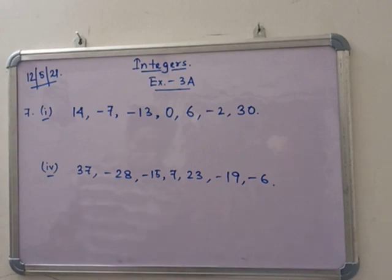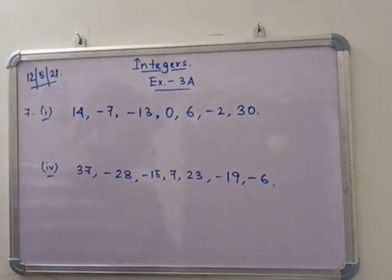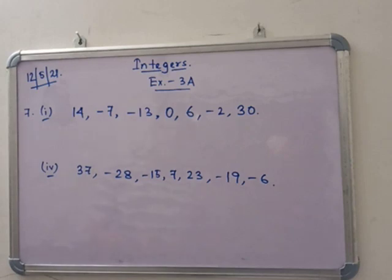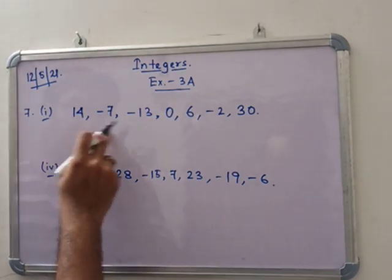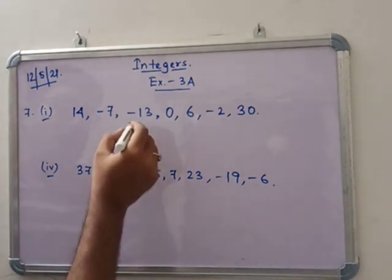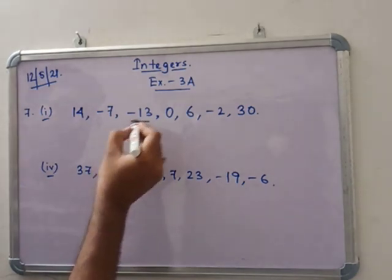In number 7, see that we write the following integers in ascending order. Ascending means we know that small to big. Now in 7.1, the smallest number is minus 13.